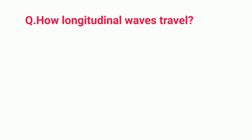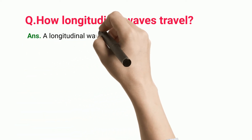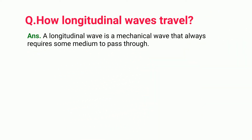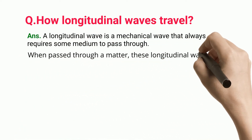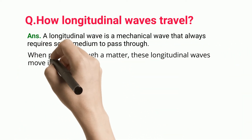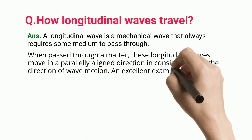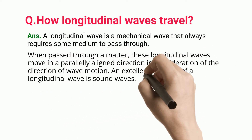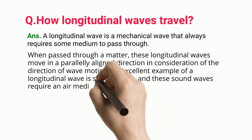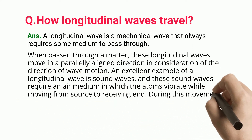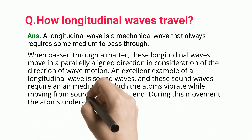A longitudinal wave is a mechanical wave that always requires some medium to pass through. When passed through a matter, these longitudinal waves move in a parallelly aligned direction in consideration of the direction of wave motion. An excellent example of a longitudinal wave is sound waves, and these sound waves require an air medium in which the atoms vibrate while moving from source to receiving end.